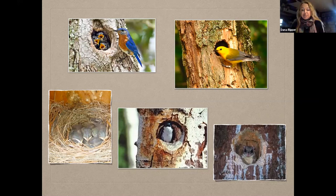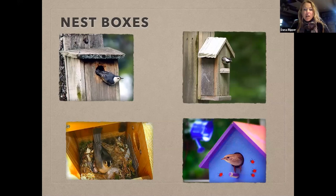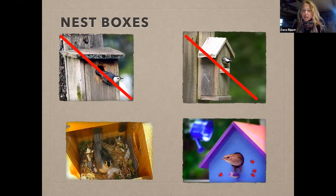Nest boxes are really helpful to our birds. The eastern bluebird, Missouri's state bird, is a good example of how humans helped a species come back from low numbers by providing suitable nesting cavities in the form of nest boxes. But it's really important to think about the quality of the nest box. The ones at the top of the slide — a white-breasted nuthatch on the left and a chickadee on the right — aren't really good nest boxes. Let's talk about what makes a good versus bad box.